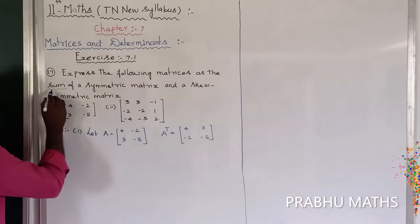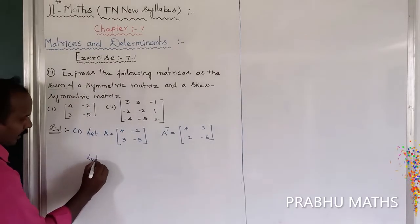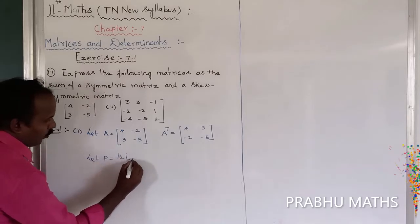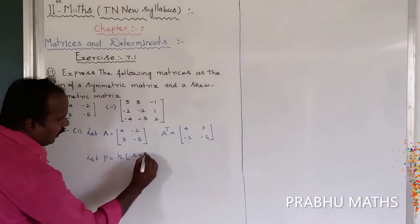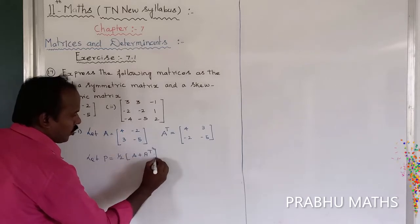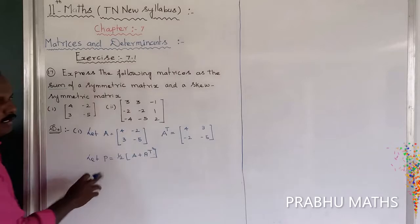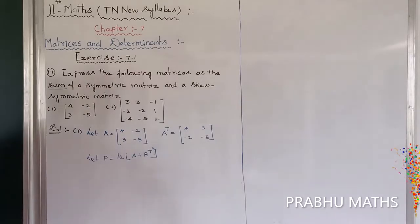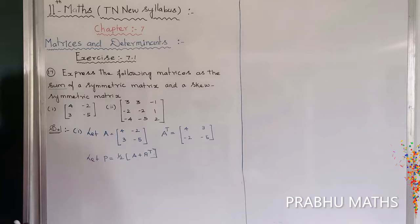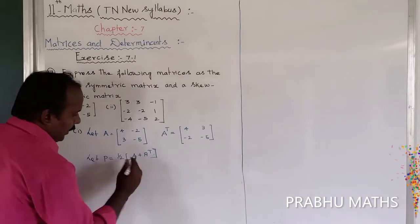Now, let us consider the value of P is equal to 1/2 into (A plus A transpose). That is the symmetric part. So P transpose is equal to P — that condition is satisfied, so P is symmetric.